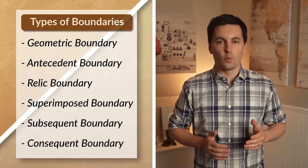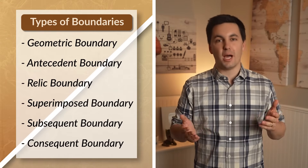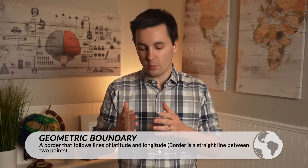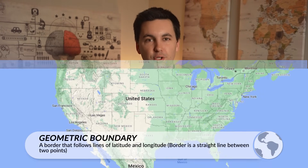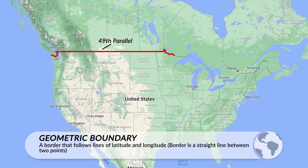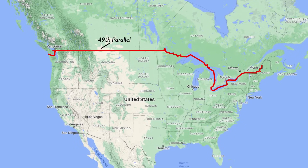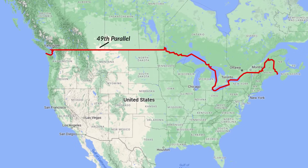When looking at boundaries around the world, we can see a variety of different boundaries. A geometric boundary uses straight lines that go with the lines of latitude and longitude, such as the border between Canada and the United States, which for the most part goes right along the 49th parallel.